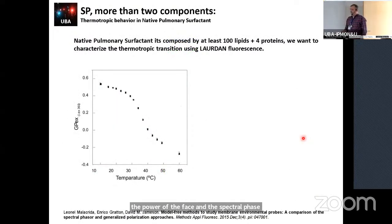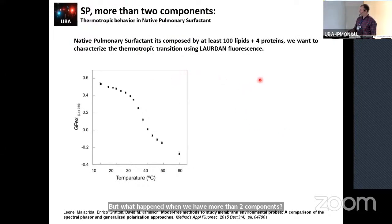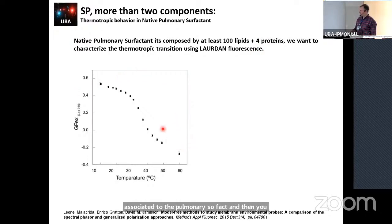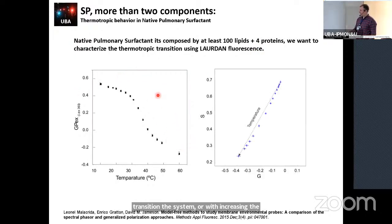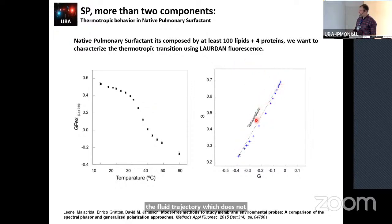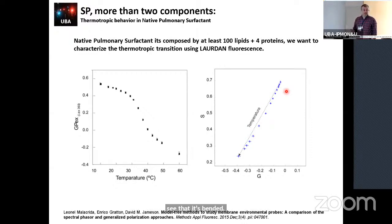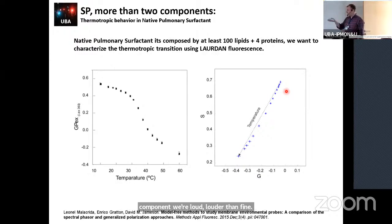What happens with more complex systems? For pulmonary surfactant — with about 100 lipids and 4 associated proteins — undergoing a phase transition with increasing temperature, the phasor reveals that the trajectory from order to fluid does not follow a straight line. This bending indicates at least one additional component where Laurdan finds a different environment, explaining the curvature.